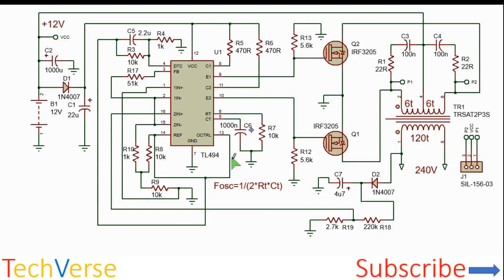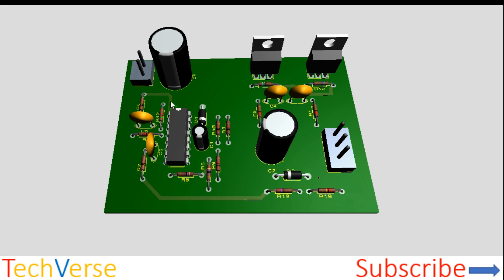Hi, welcome to TechVerse. In this video I'll show you how you can make a power inverter based on the TL494 pulse width modulation IC. So the final build is as shown. Here is your input 12 volts, and here you have the three connections to the transformer: the center tap and the end primary windings.